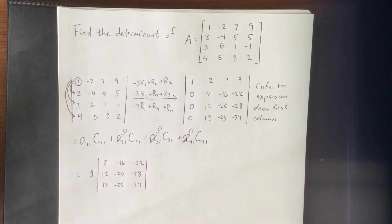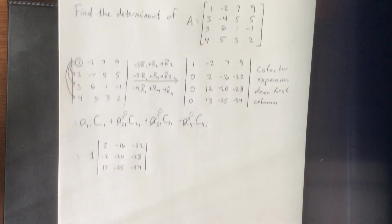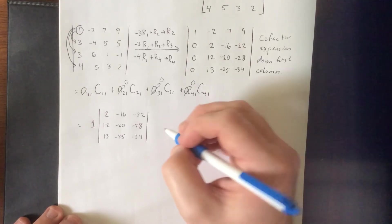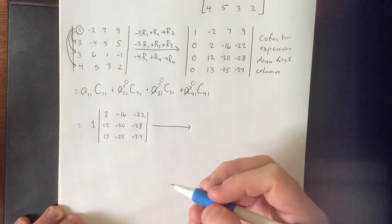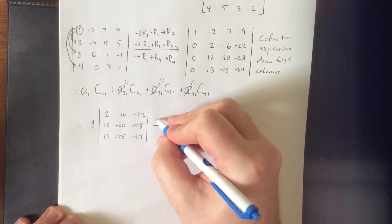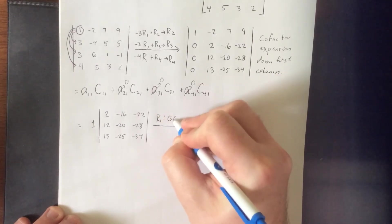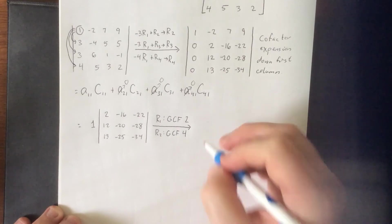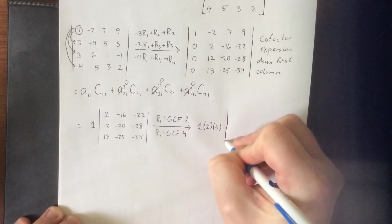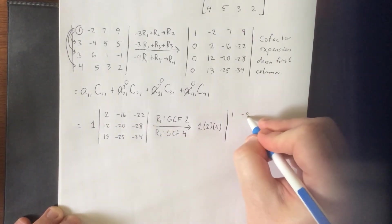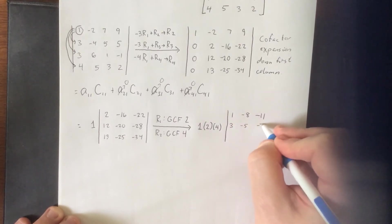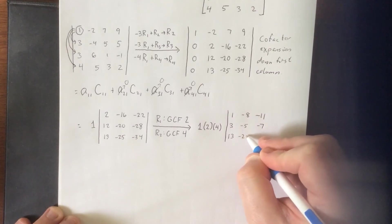These numbers are still looking pretty intimidating. We can make them less so by applying elementary row operation number two — multiplying a row by a non-zero constant — but since that impacts the determinant, we'll treat it as factoring out a GCF. From row 1, factor out a GCF of 2, giving 1, -8, -11. From row 2, factor out a GCF of 4, giving 3, -5, -7. The third row stays as is.